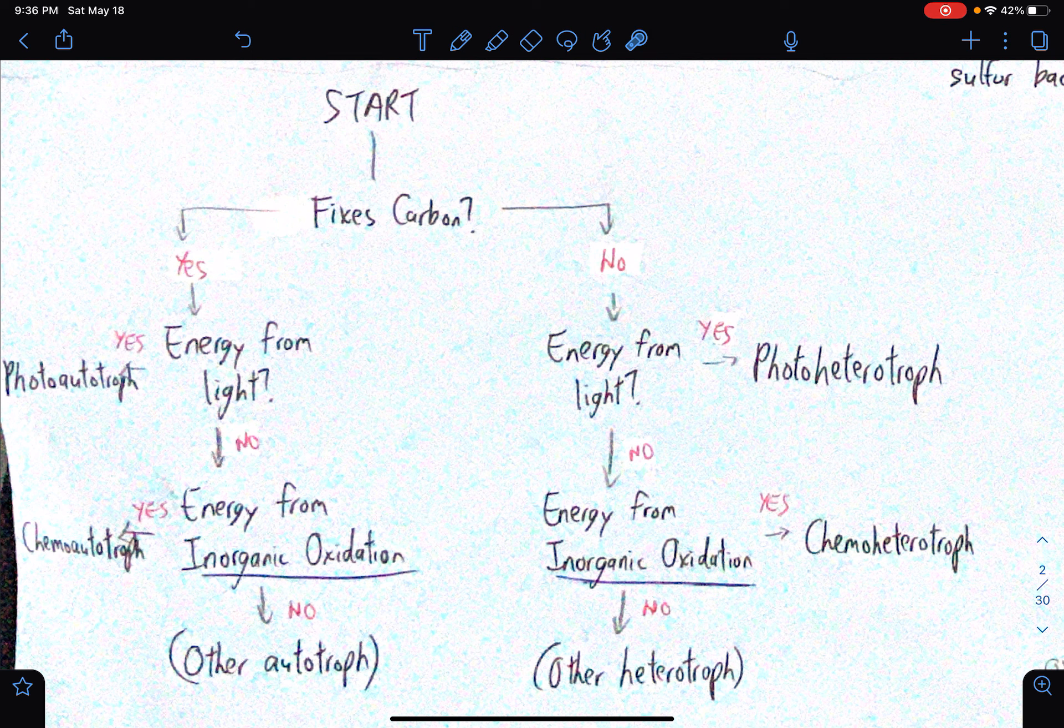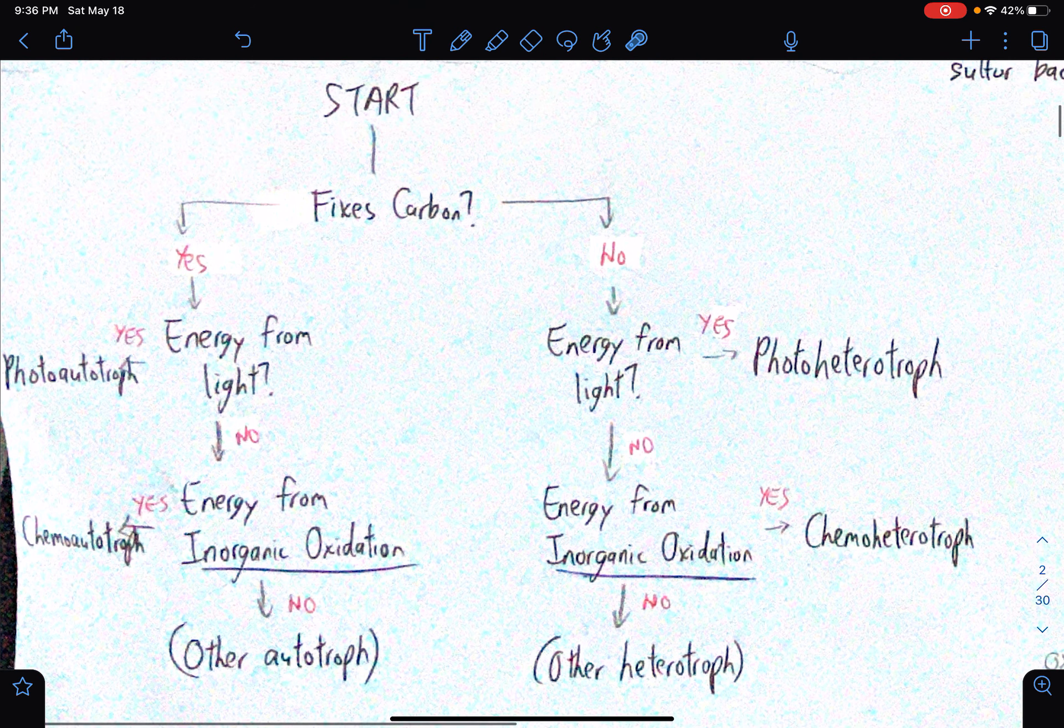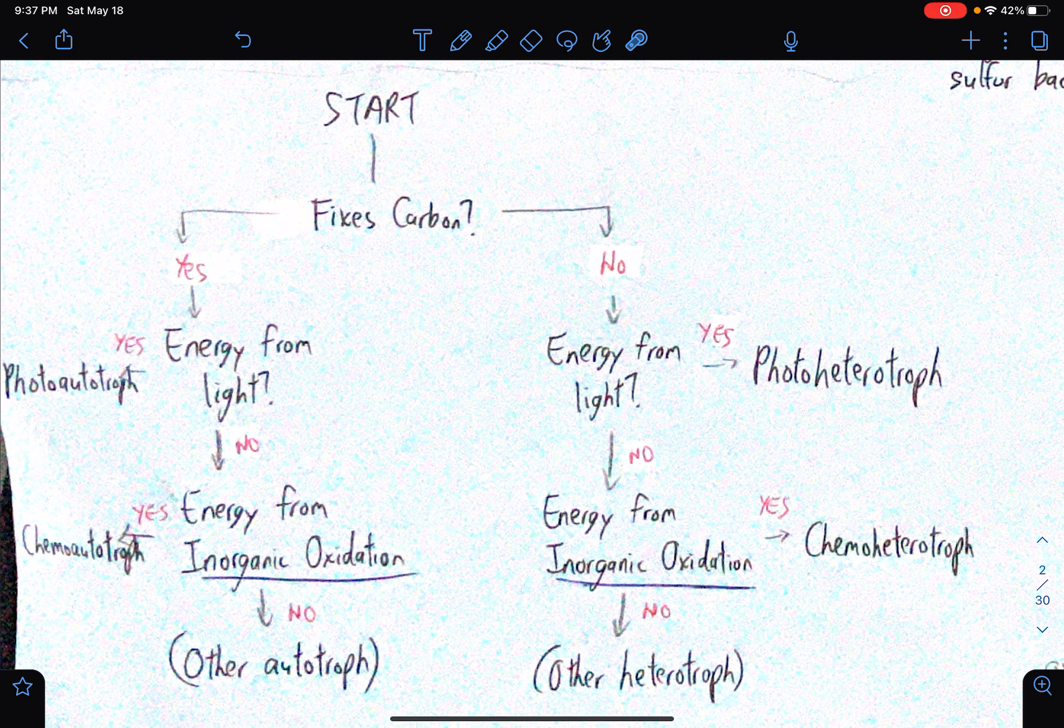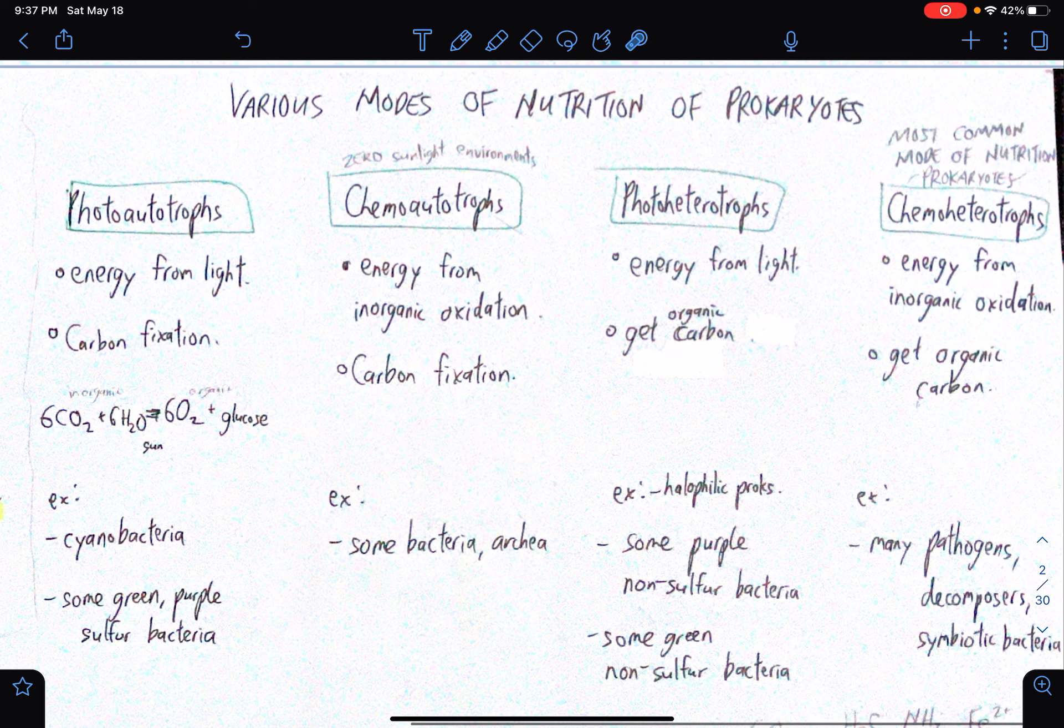How about those that still fix carbon, but then they also get energy from inorganic oxidation. So if they get energy from inorganic oxidation, then there is automatically a prefix chemo. And then auto if it fixes carbon, if it doesn't, then hetero. So essentially we already tackled four of the modes of nutrition of prokaryotes. Actually there's an extension, but then yeah, it's better if we stick to the four, the main four. So formally, let's talk about each one.